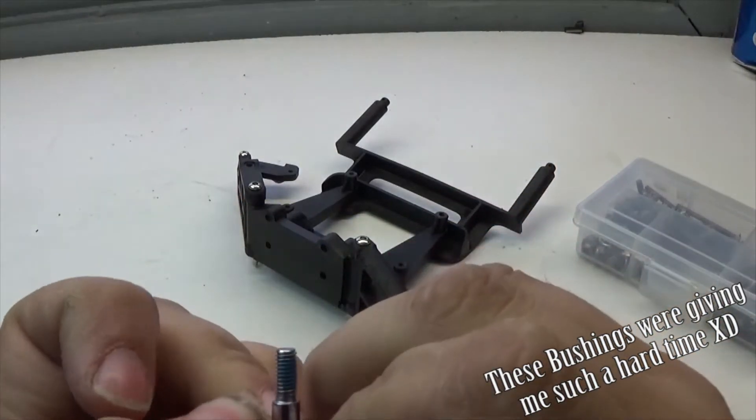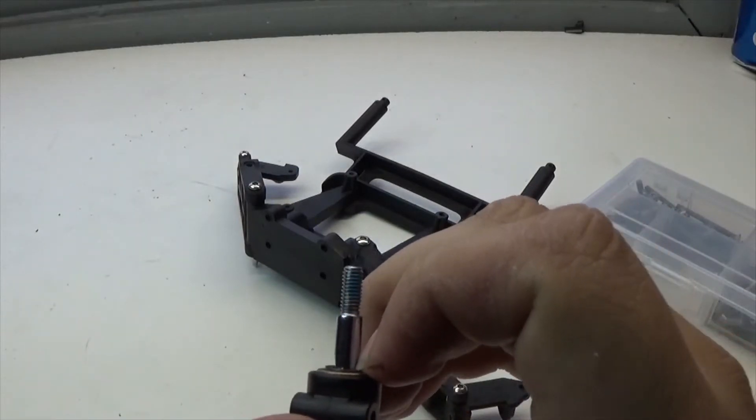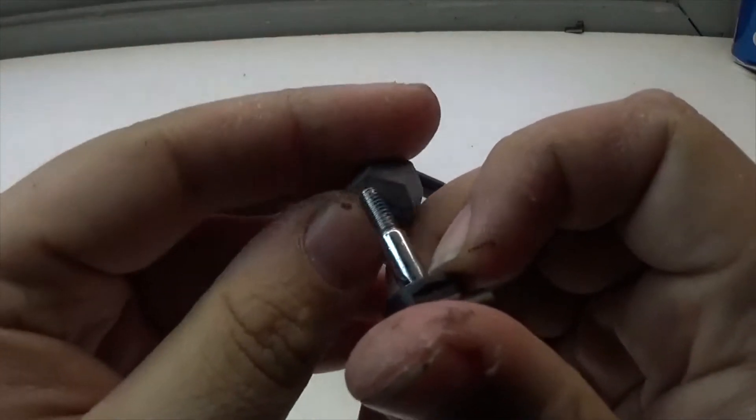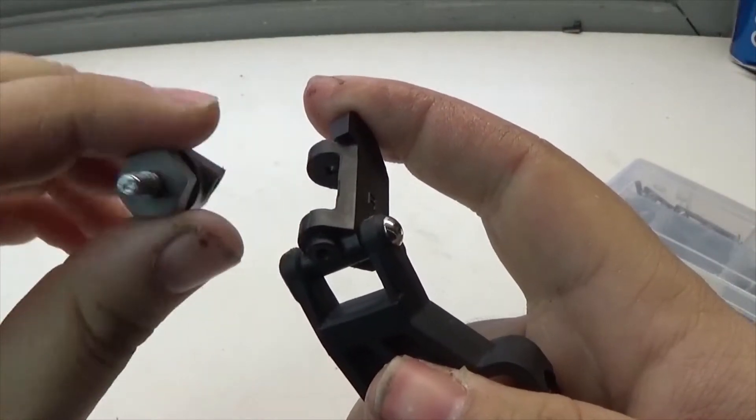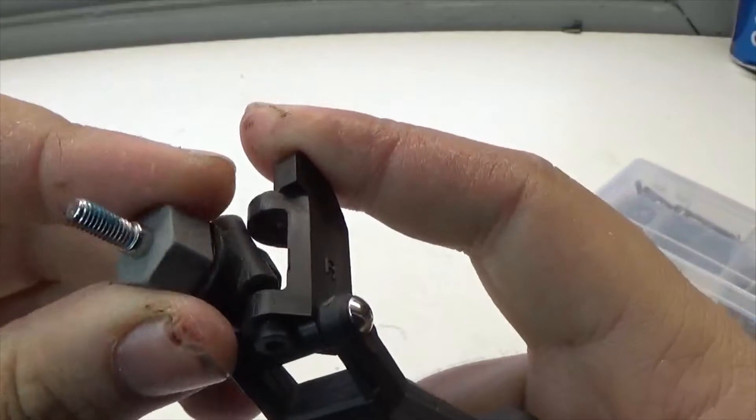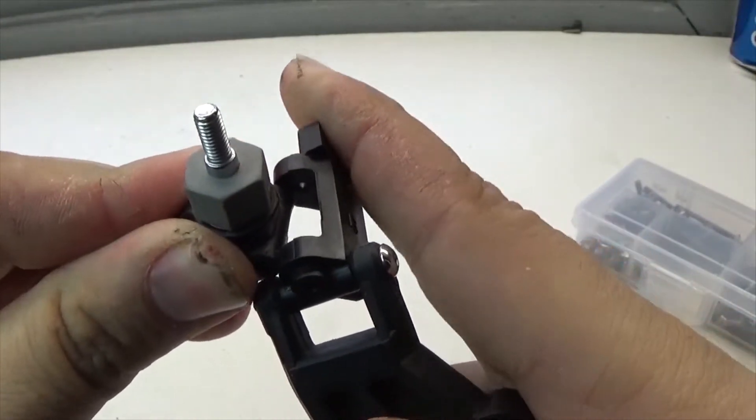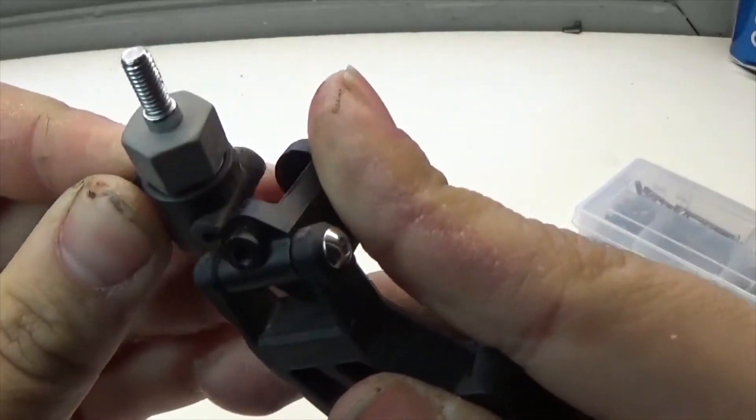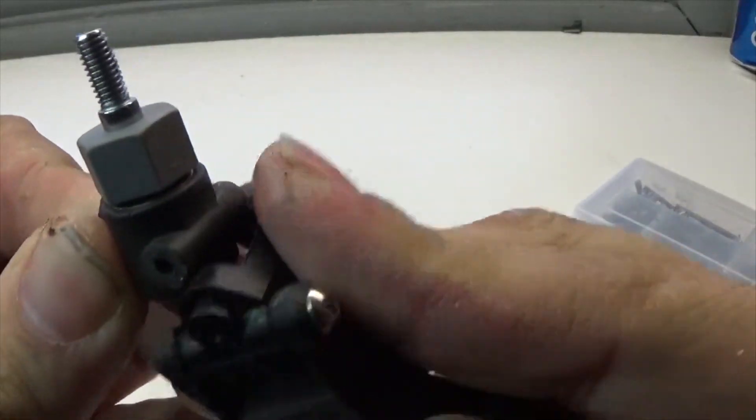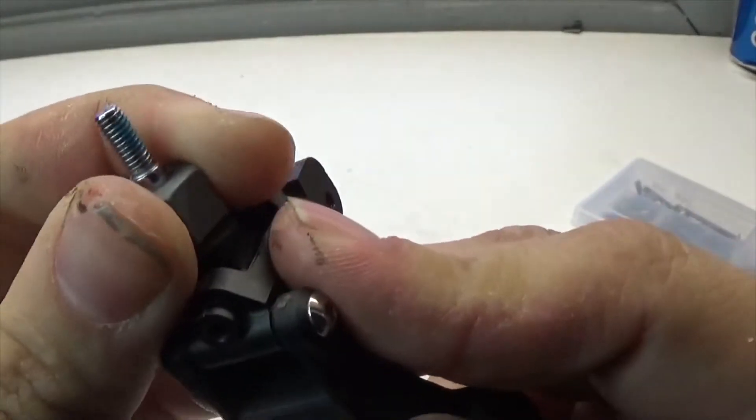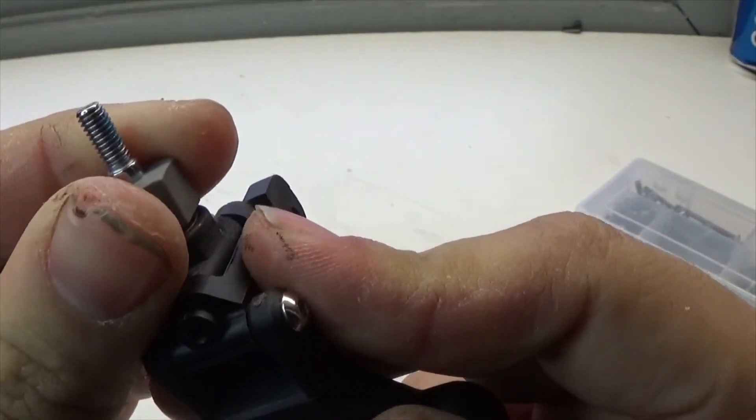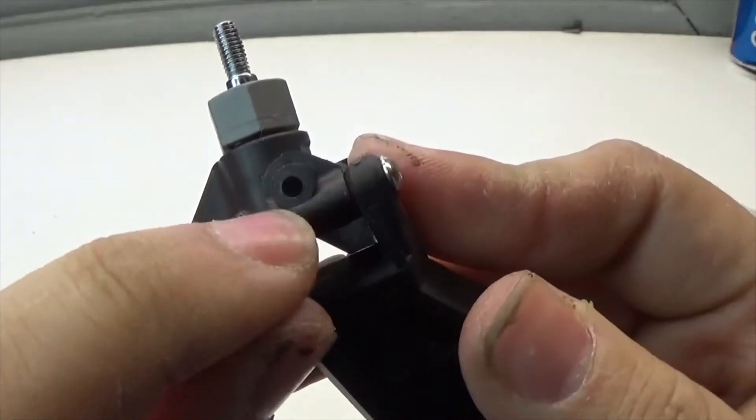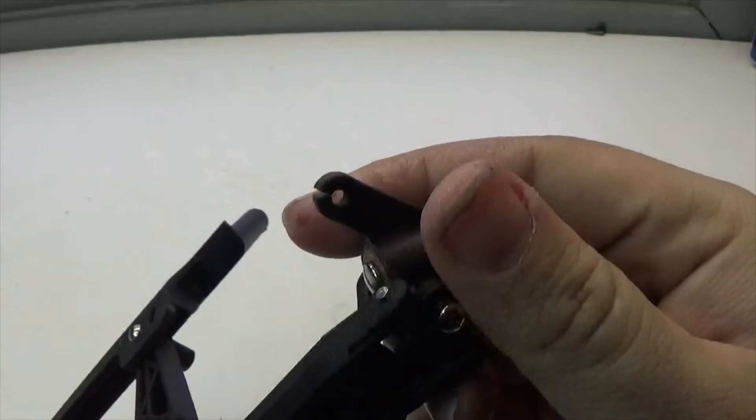Now that we have the spindle assembled, we're going to take the whole assembly, slide the steering block into the caster, which seems to be very hard. There we go. And it's going to be held together with one screw.